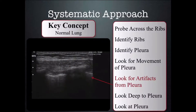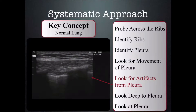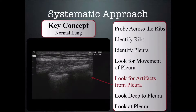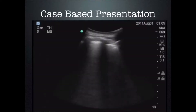As we talked about before, we use a systematic approach. We place our probe across the ribs, we identify the ribs, then we identify the pleura. Once we've identified the pleura, we look for movement of the pleura. Once we've identified the movement, then we look for artifacts arising from the pleura.